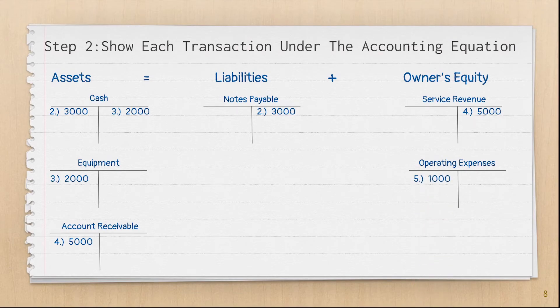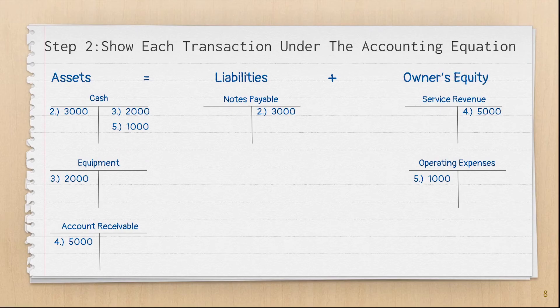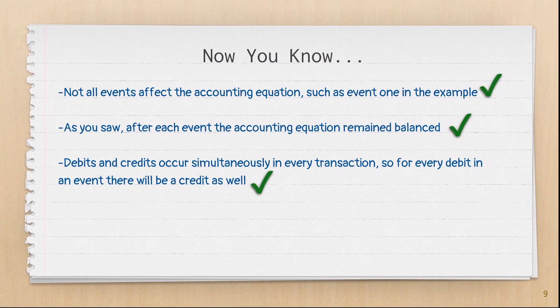Lastly, in event five, Dakota paid $1,000 cash in operating expenses. Notice how the operating expense is debited to increase it, even though it is on the right side of the equation. The reason for this is that expenses are a subcategory of the retained earnings account, and debiting an expense account will act to decrease the retained earnings account. Now you know that some events will not affect the accounting equation, the accounting equation will always remain balanced, and for every debit, there will be a credit.